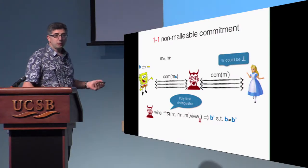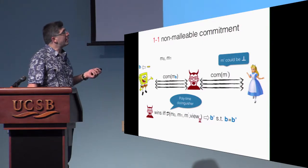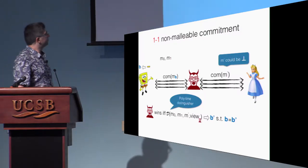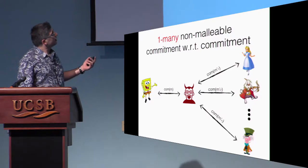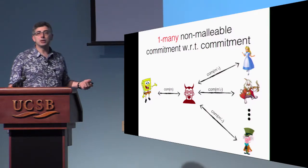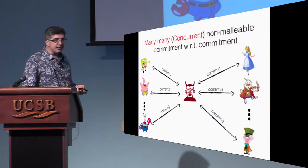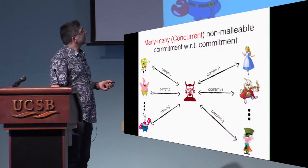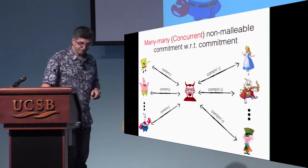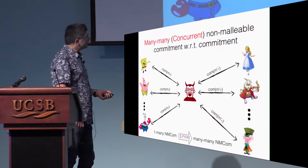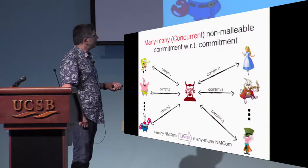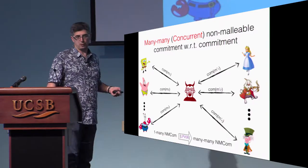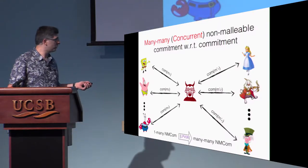Importantly, in general with a non-malleable commitment scheme, the adversary might commit to a bogus message — one that cannot be opened at all. That's part of his power. This is the one-many non-malleability setting where the man-in-the-middle plays with multiple verifiers, and the many-many case is the concurrent non-malleable commitment definition. By a theorem of Lin et al., any one-many non-malleable commitment scheme is also a many-many non-malleable commitment scheme, so we mainly focus on one-many.